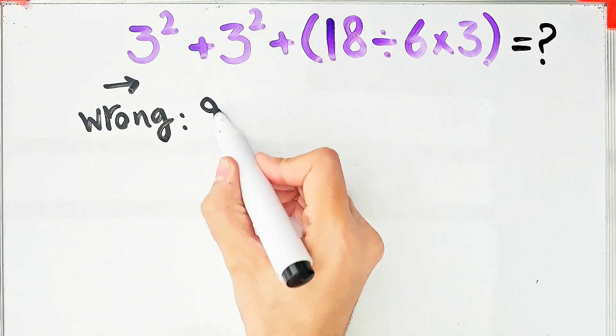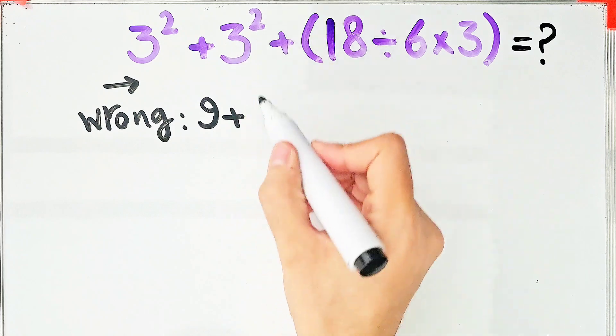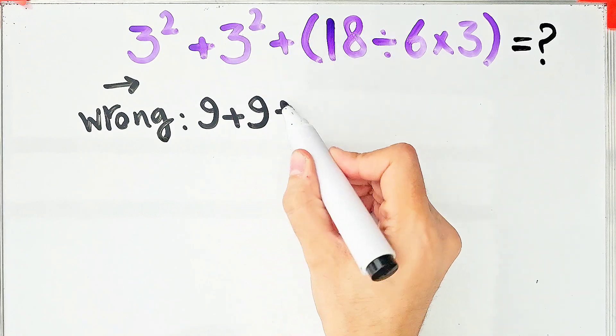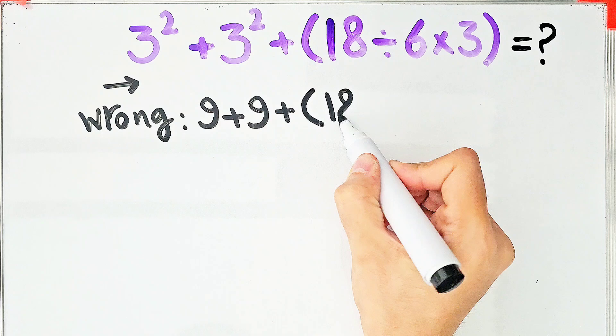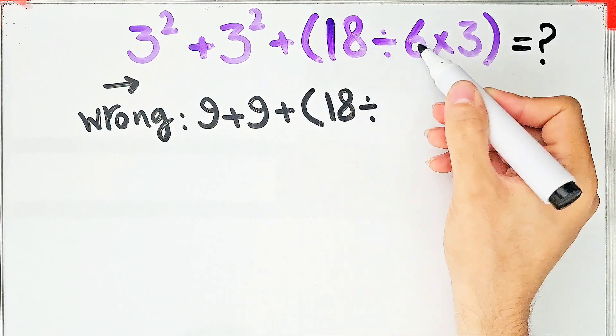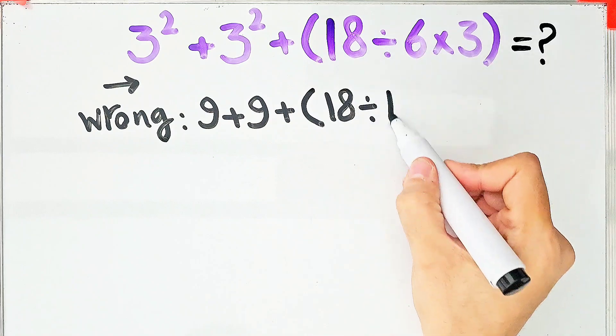3 to the power of 2 equals 9 plus 3 to the power of 2 that equals 9, then plus open parentheses 18 divided by 6 then times 3. 6 times 3 equals 18.